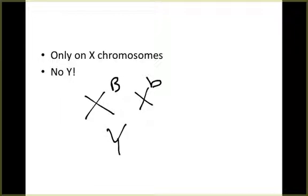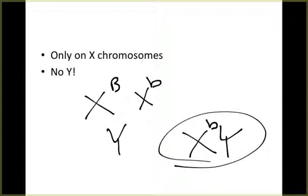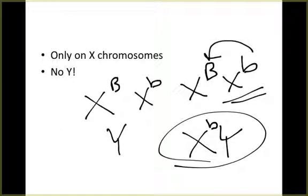Sex-linked traits typically appear about 95 percent of the time in males. That's because males are XY, so if they have the recessive allele they will have the disorder. Females can have the allele but have it masked by the dominant allele. Men are much more likely to get sex-linked genetic disorders than females because females have another X chromosome that can mask the recessive allele.